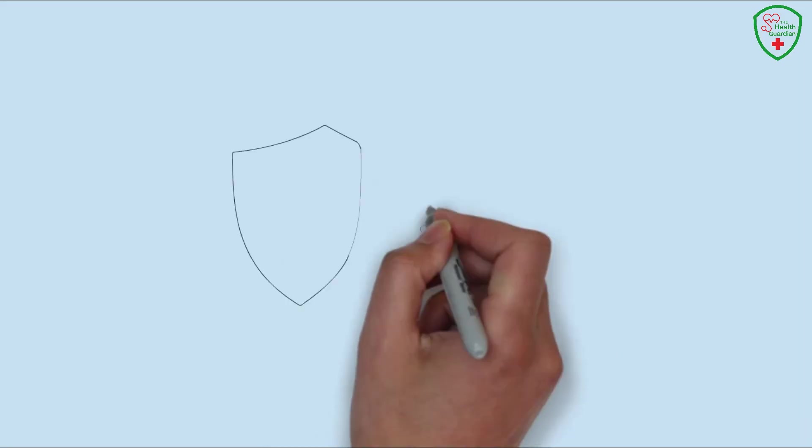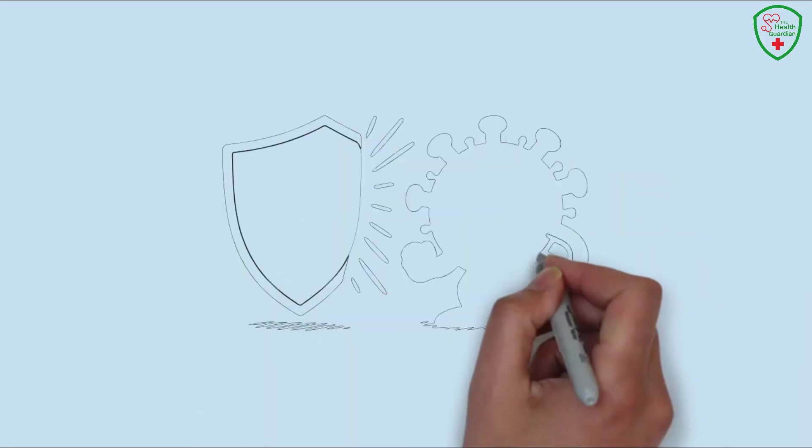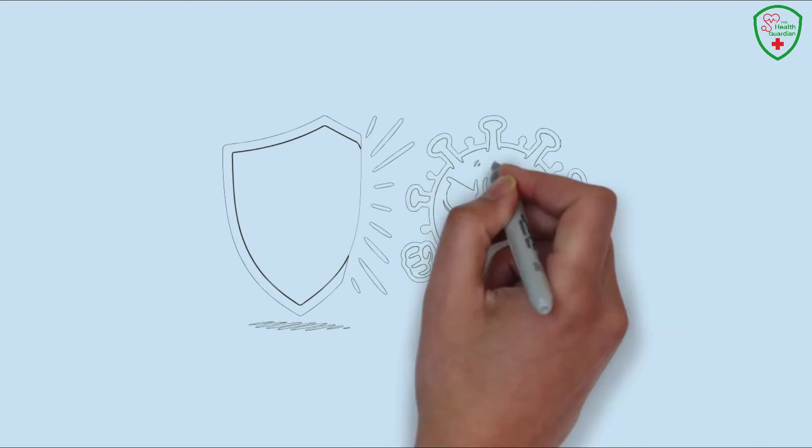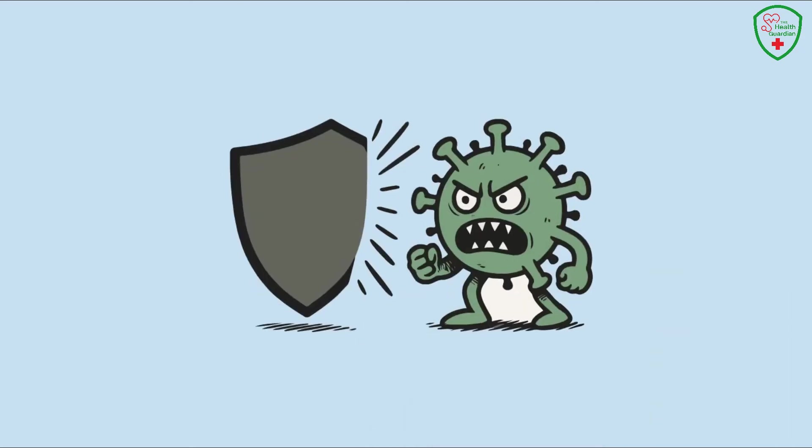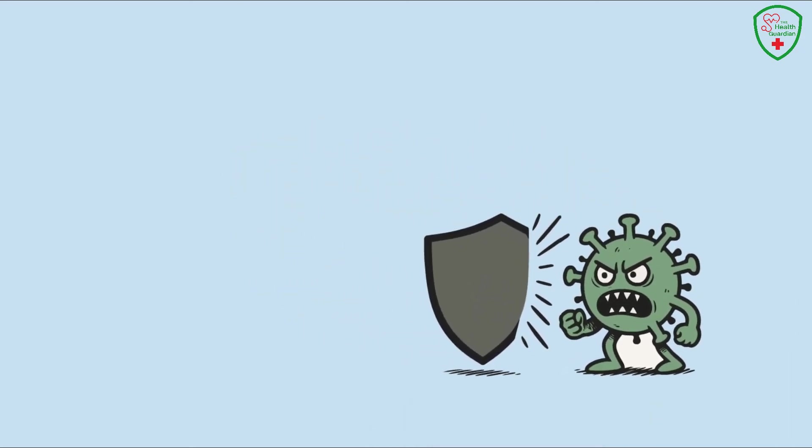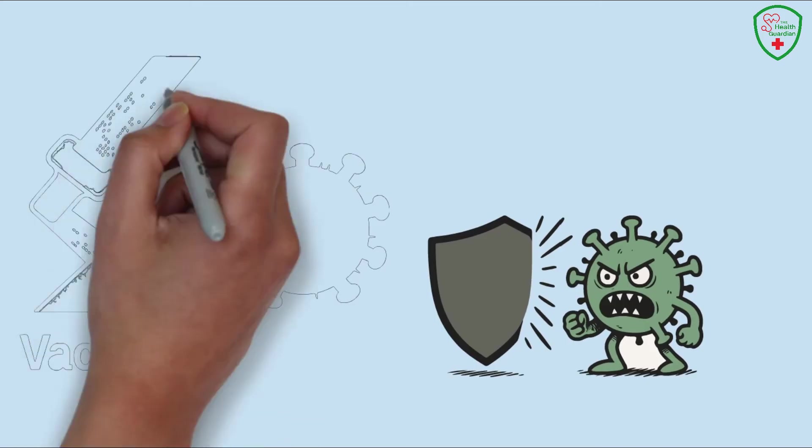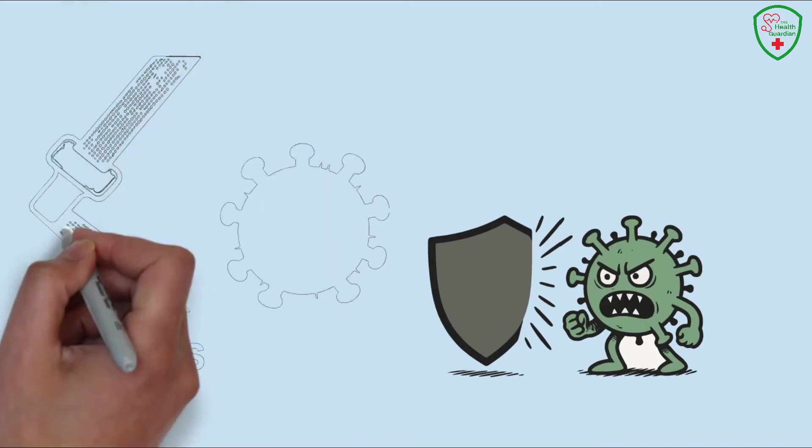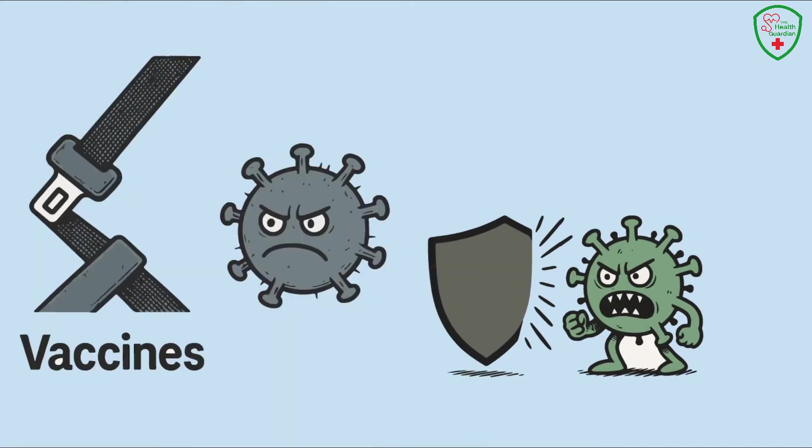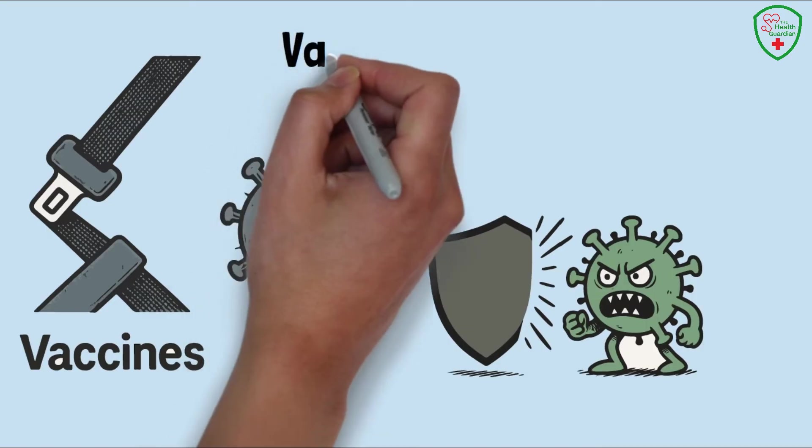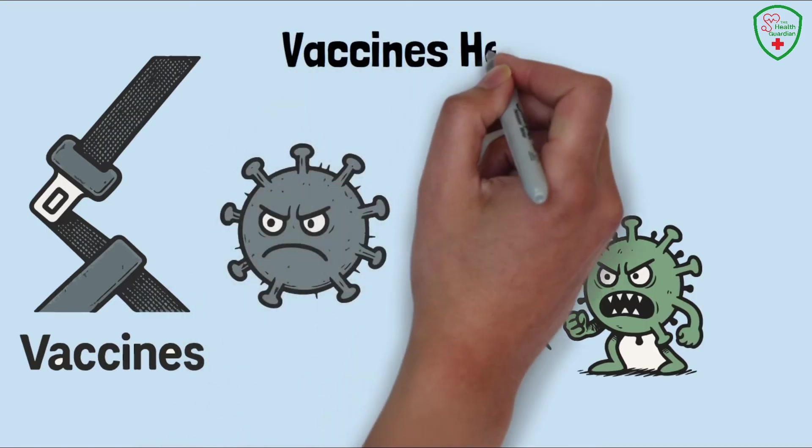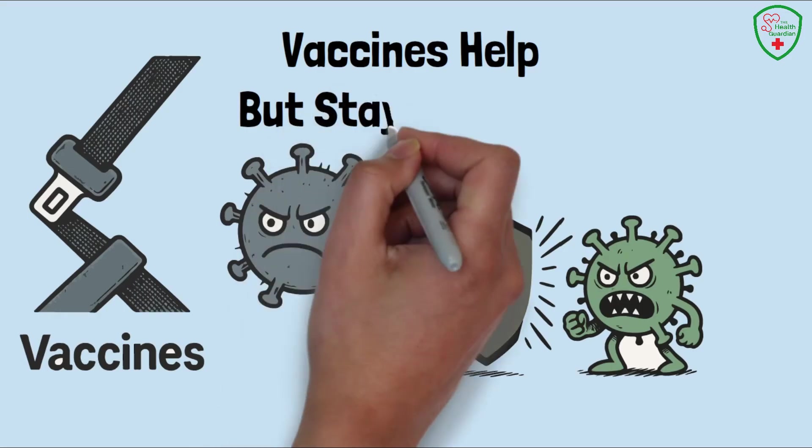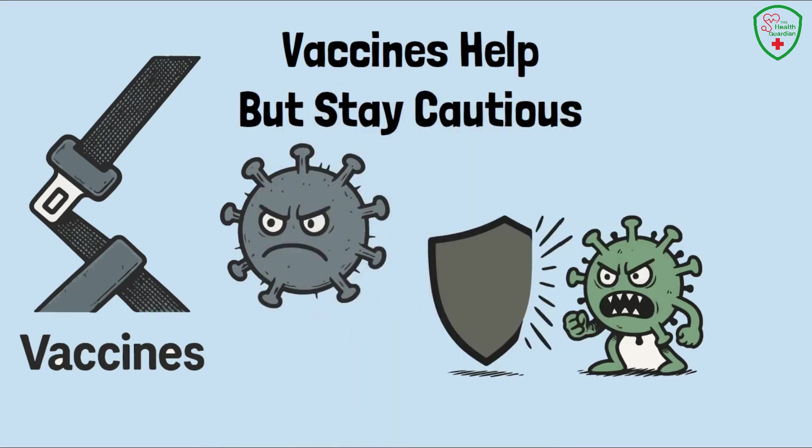And don't think vaccines are a total shield. Vaccinated folks can still get breakthrough infections with FLIRT variants, though their symptoms are usually less severe, like a bad cold instead of a hospital stay. Vaccines are like a seat belt. They don't prevent every crash, but they make it way less likely you'll get seriously hurt. Still, KP.2 and KP.3 have mutations that might make them a bit better at dodging vaccine protection.